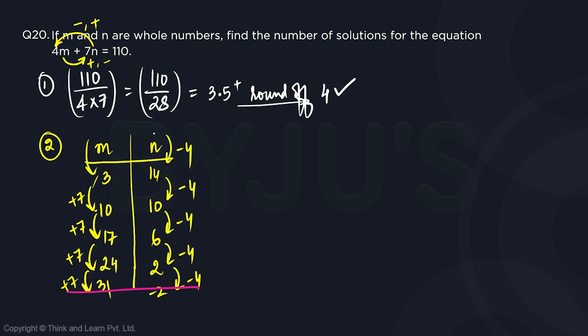minus 4 change in n will result in 18 for n. 18 minus 4 is 14. But if we need to add 7 to get 3, m will be minus 4. Since minus 4 is not a whole number, we can't take minus 4 comma 18.